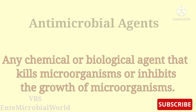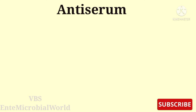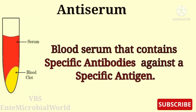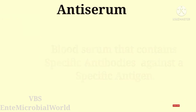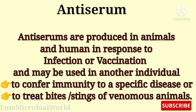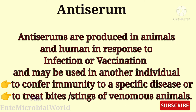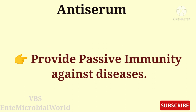Next, we are going to see about antiserum. Blood serum that contains specific antibodies against a specific antigen is called antiserum. Antiserums are produced in animals and humans in response to infection or vaccination, and may be used in another individual to confer immunity to a specific disease or to treat bites or stings of venomous animals. In simple words, antiserum is used to provide passive immunity against diseases.